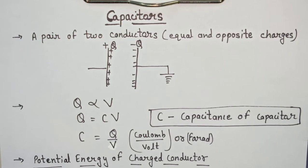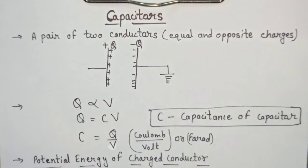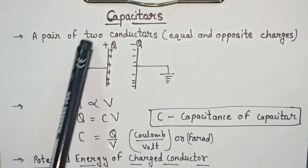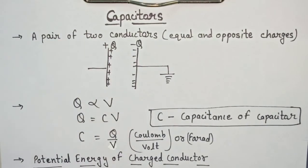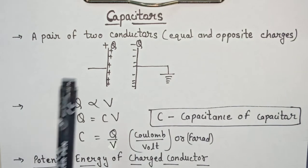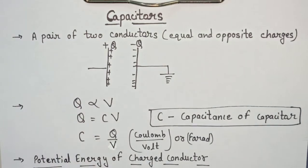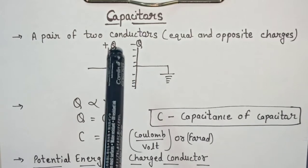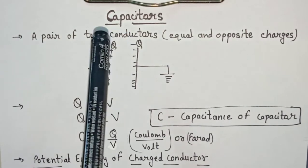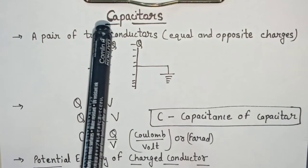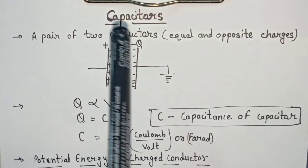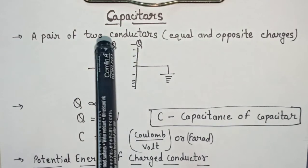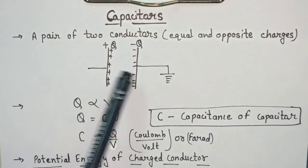Hello students, today we will start a new topic: capacitors. What are capacitors? A capacitor is an arrangement of two conductors. It is a pair of two conductors of equal and opposite charges. You have seen the case of a dipole — in a dipole, there were two charges of equal magnitude but opposite polarity. But here, it is a pair of two conductors, not just two point charges.